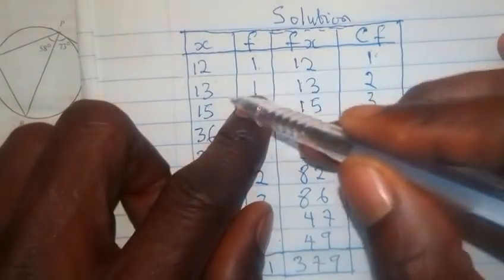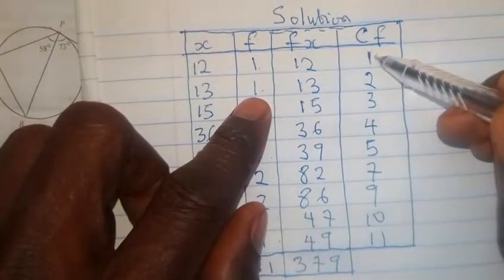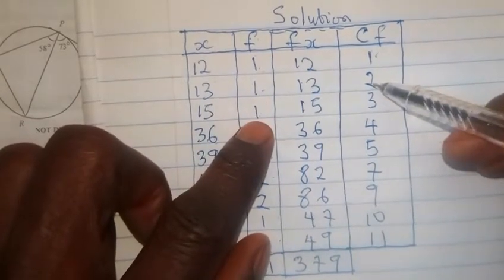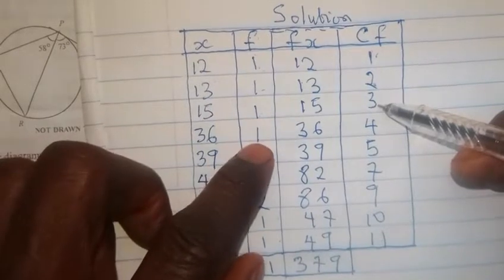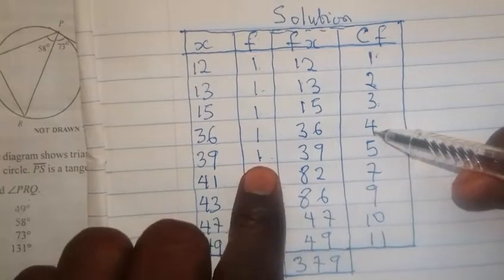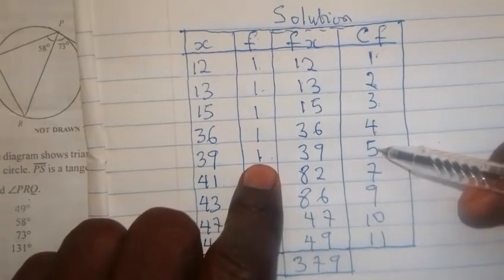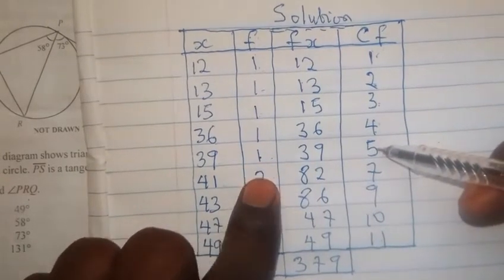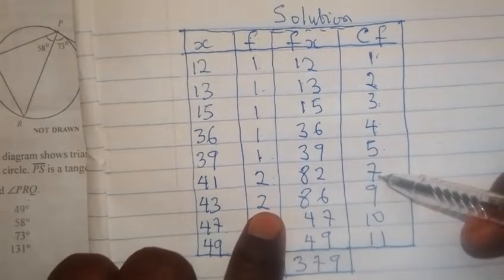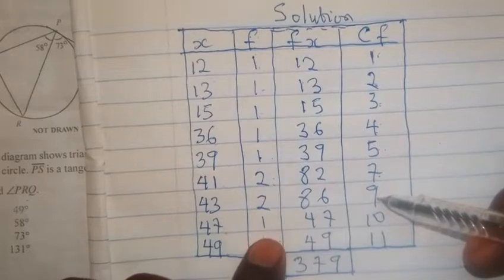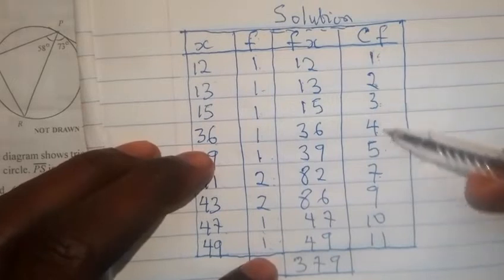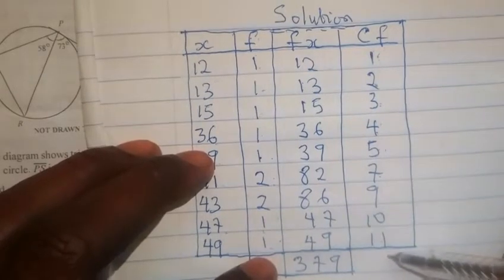Now, the next number below this 1 is 1. 1 plus this 1 will give us 2. Go to the next number in the frequency column, which is 1. Add it to 2. It gives us 3. Go to the next number, which is 1. Add it to 3. It gives us 4. Go to the next number, which is 1. Then add it to 4. It gives us 5. Go to the next number, which is 2. Add it to 5. It gives us 7. Go to the next number, 2. Add it to 7. It gives us 9. The same thing you will do. 1 plus 9 is 10. And 1 plus 10 is 11. So, these are all the values for the cumulative frequency.